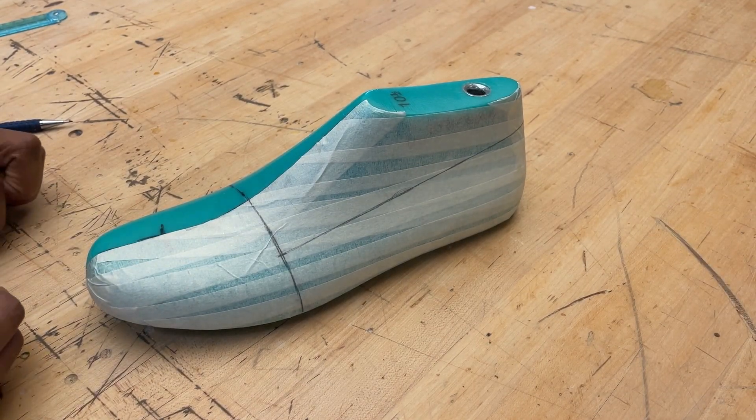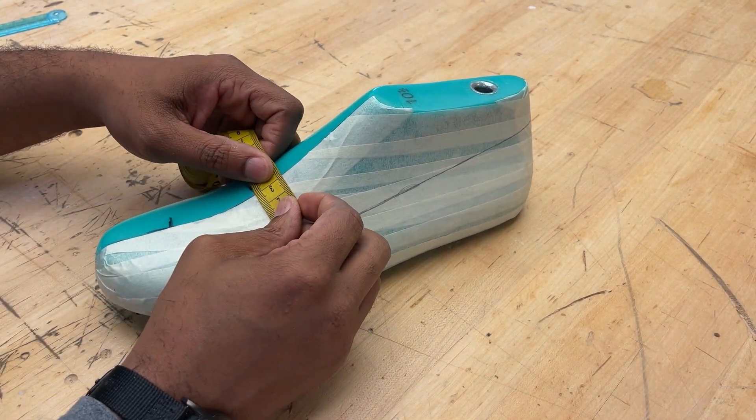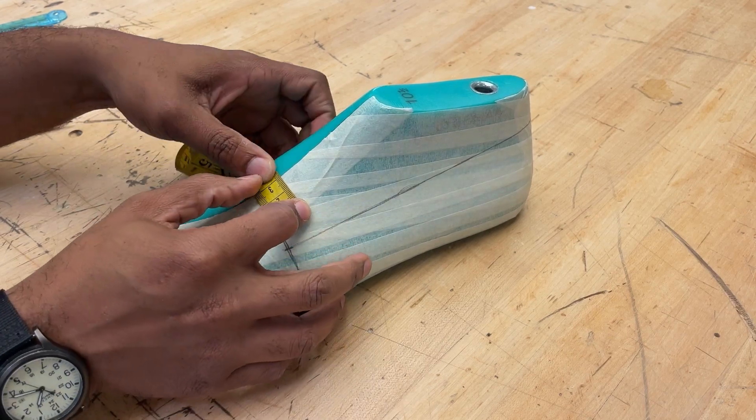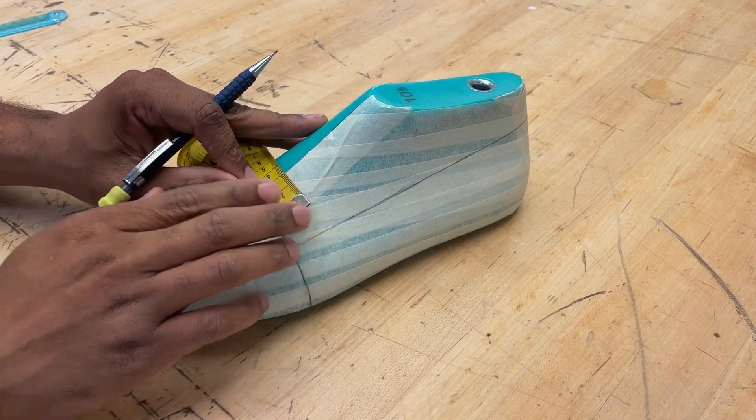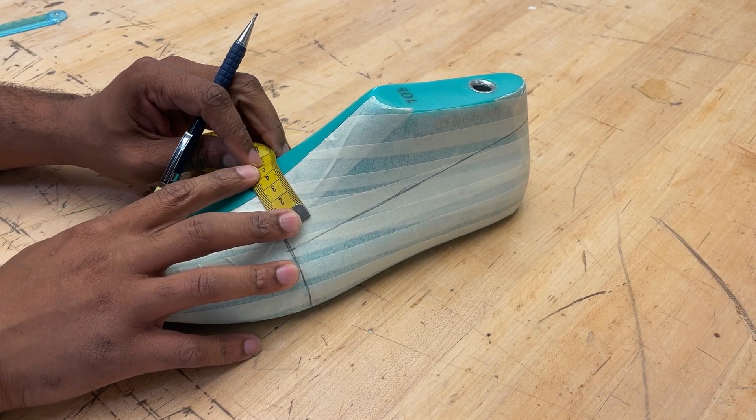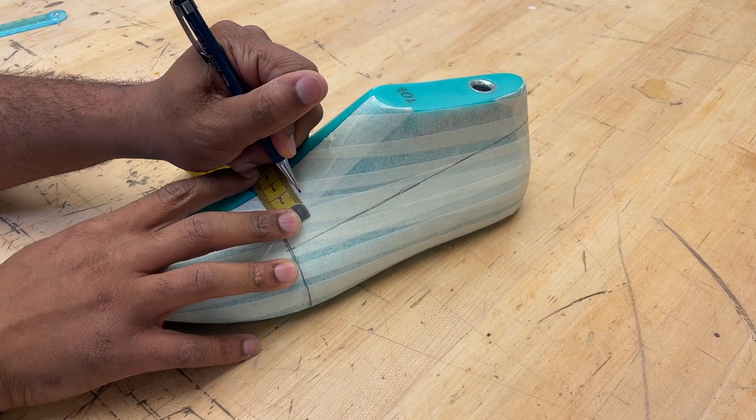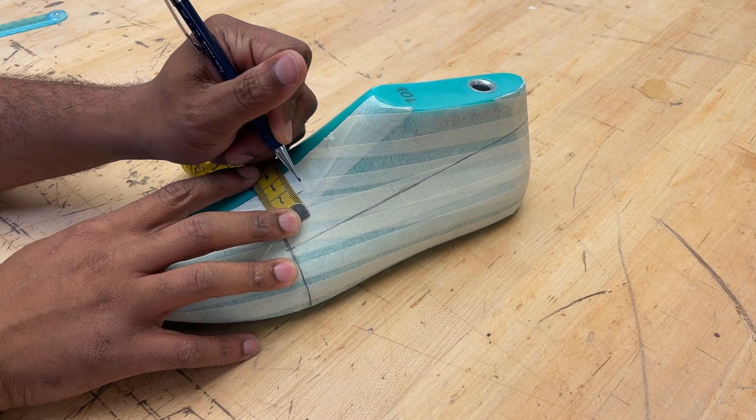So once your last has been taped and your critical points have been marked, you can start by designing the opening, also known as the throat. This is the area where your laces lie and the tongue of your shoe will be placed under.